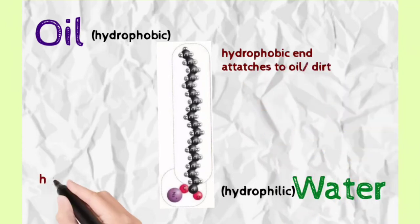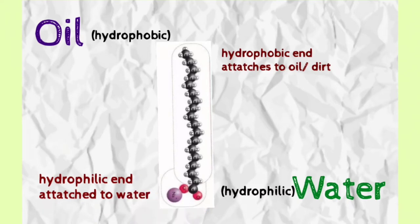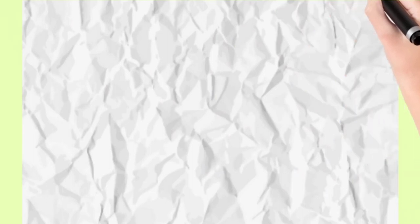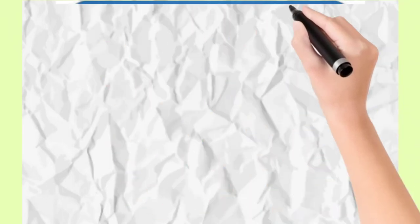hydrophobic end is attached to oil or dirt, and the other end is hydrophilic, which is attached to water. This is why when we clean the surface, we have to use the water